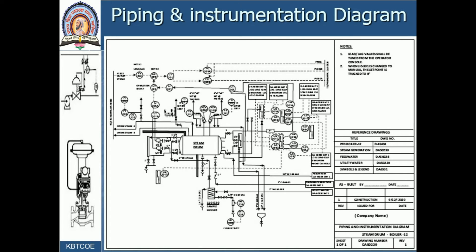The second diagram is the piping and instrumentation diagram, also called process and instrumentation diagram. In the process flow diagram we are not having instrumentation — for example, how you are going to control the temperature of the steam coming out of the boiler is not explained in the PFD. How it gets controlled is not shown. But in the P&ID — the process and instrumentation diagram — we can understand the flow of a process as well as how different process parameters are controlled by different process control loops. So this is somewhat more complex.